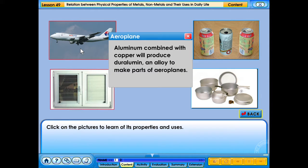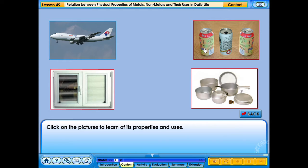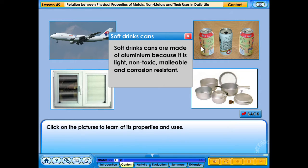Aluminum combined with copper will produce duralumin, an alloy to make parts of airplanes. Soft drink cans are made of aluminum because it is light, non-toxic, malleable and corrosion resistant.